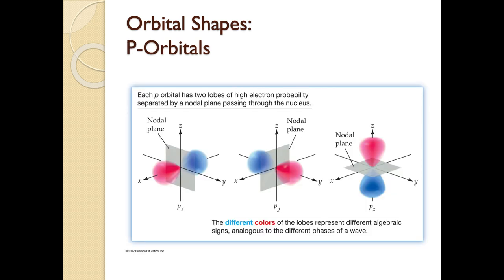The other type of node is an angular node. Angular nodes are big nodal planes that slice your orbitals into chunks. For s orbitals, since they are spheres, there are no angular nodes. Angular nodes always equal whatever our l value is — so there are always l angular nodes per orbital. S orbitals have zero angular nodes, p orbitals have one, d orbitals always have two, and f orbitals have three.